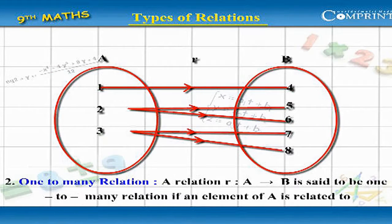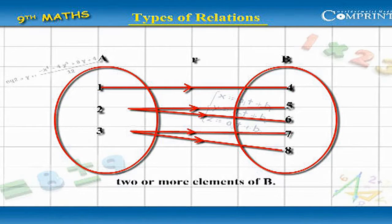1-to-Many Relation: A relation from A to B is said to be a 1-to-Many relation if an element of A is related to two or more elements of B.